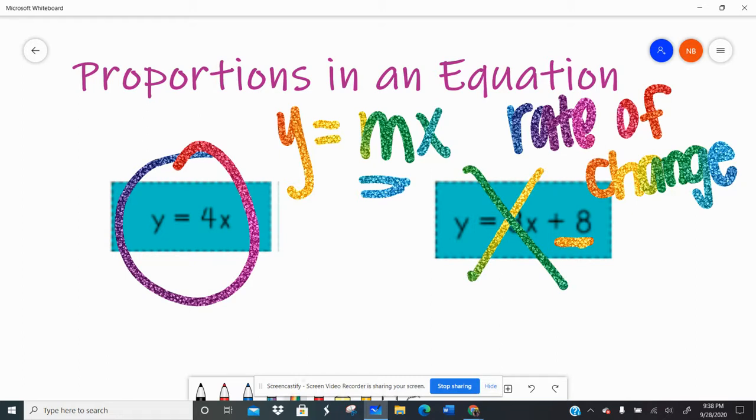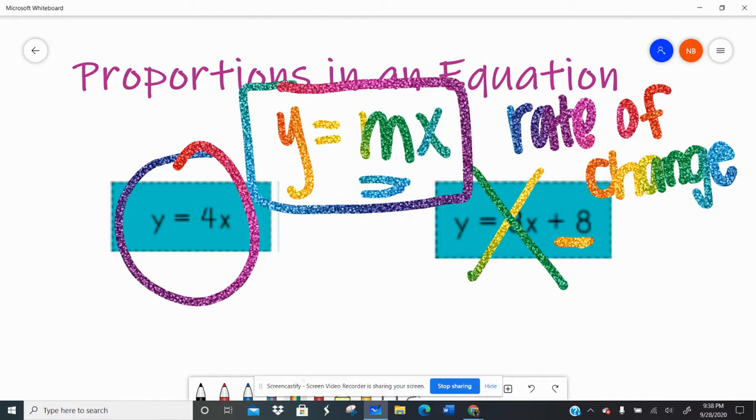So you're looking for like y equals 4x, y equals 1 half x, y equals 3x, y equals 12x, right? Anytime you have a y equals 2x minus 4 or a plus 8 or a plus 2, then that is not a proportional relationship. So in order to be a proportion, you have to start at 0, 0 and then increase at the same rate. So those are the ones that you're looking for when looking at an equation.